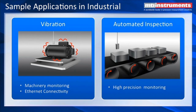Vibration is another popular application — machinery health monitoring. Our digital AccuMeasure amplifier has Ethernet connectivity and USB, so it's ideal for networking a number of systems that could be used in a plant for vibration monitoring.